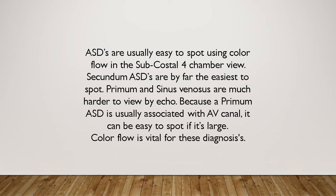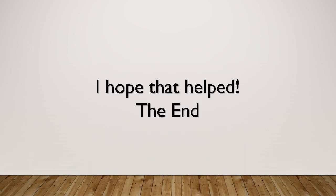ASDs are usually spotted using color flow in the subcostal four-chamber view. It's important to look for everything from a large ASD to a small PFO. Secundum ASDs are by far the easiest to spot; primum and sinus venosus ASDs are much harder to view by echo. Color flow is vital for these diagnoses. Pay attention to everything in this view.